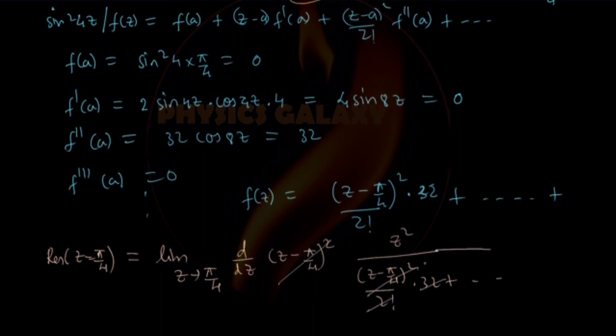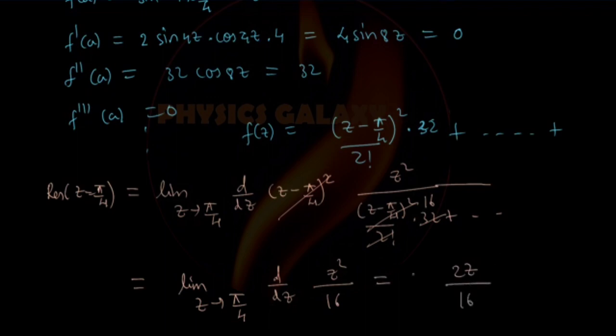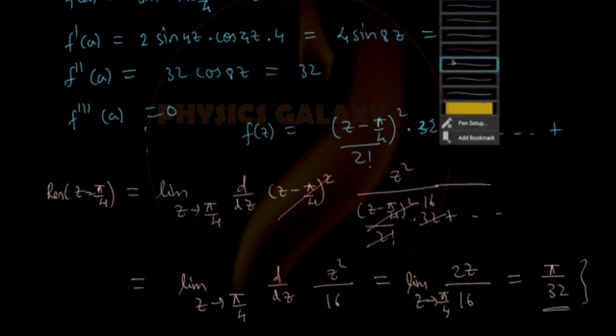Then clearly the differential will be limit z tends to π/4 of d/dz[z²/16]. This gives 2z/16, and putting z = π/4, that is nothing but π/32. So the residue is π/32.